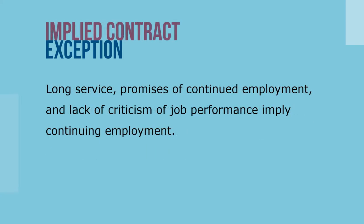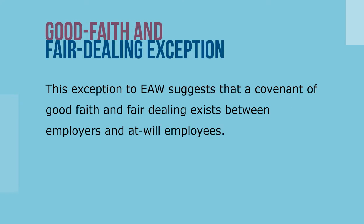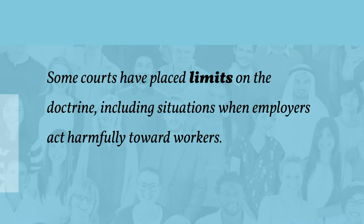The implied contract exception holds that employees should not be fired as long as they perform their jobs. Length of service, promise of continued employment, and lack of criticism of job performance imply continuing employment. The good faith and fair dealing exception suggests that a covenant of good faith and fair dealing exists between employers and at-will employees. If an employer breaks this covenant by unreasonable behavior, the employee may seek legal recourse. Over the past several decades, many state courts have revisited and revised employment at will contractual provisions, placing limits on the doctrine including situations when employers act harmfully towards workers.